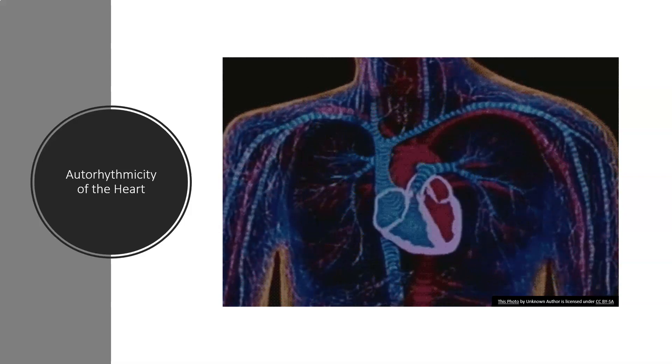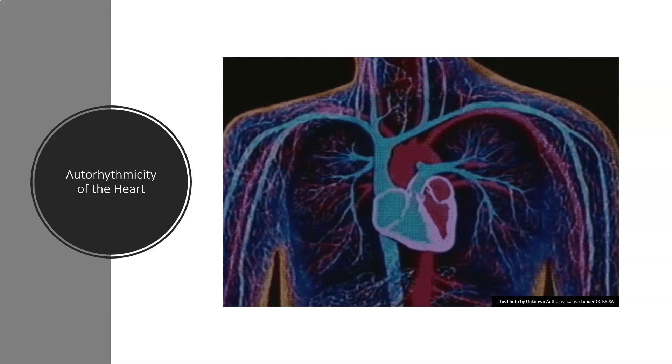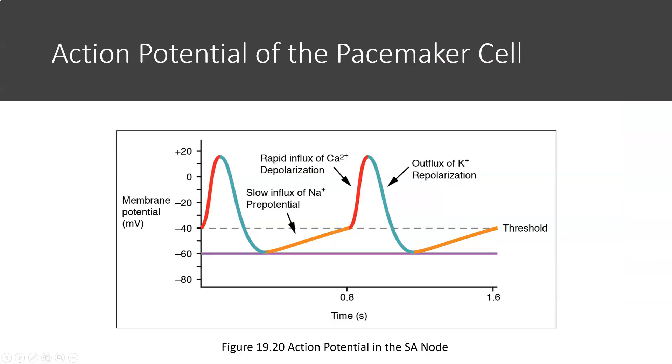So what exactly is the mechanism behind this autorhythmic contraction of the heart? As previously mentioned, the pacemaker cells of the sinoatrial node are responsible for generating the stimulus for contraction in the heart. Similar to neurons, this stimulus is called an action potential. However, there are some key differences.